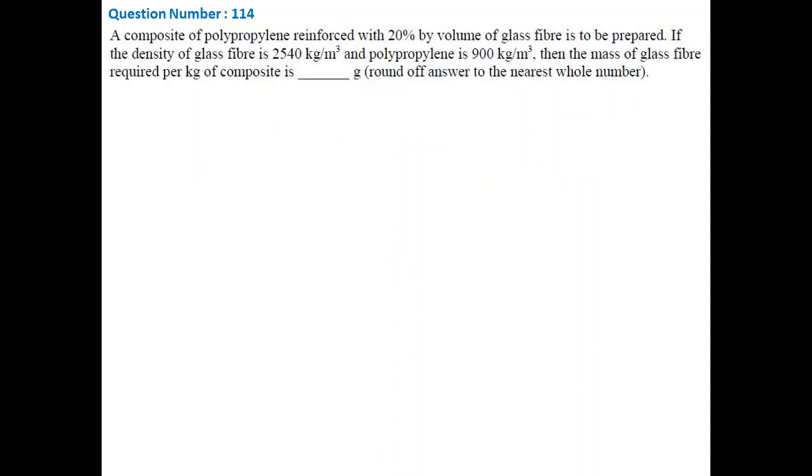Next question: a composite of polypropylene reinforced by 20% by volume of glass fiber is to be prepared. Densities of glass fiber and polypropylene are given. Now we need to calculate the amount of glass fiber in grams per kg of composite. In order to solve this numerical, we have to calculate the density of the composite, and then we can determine the volume of 1 kg of composite. As volume fraction and density of glass fiber are given, we can determine the weight of fiber per kg of composite.